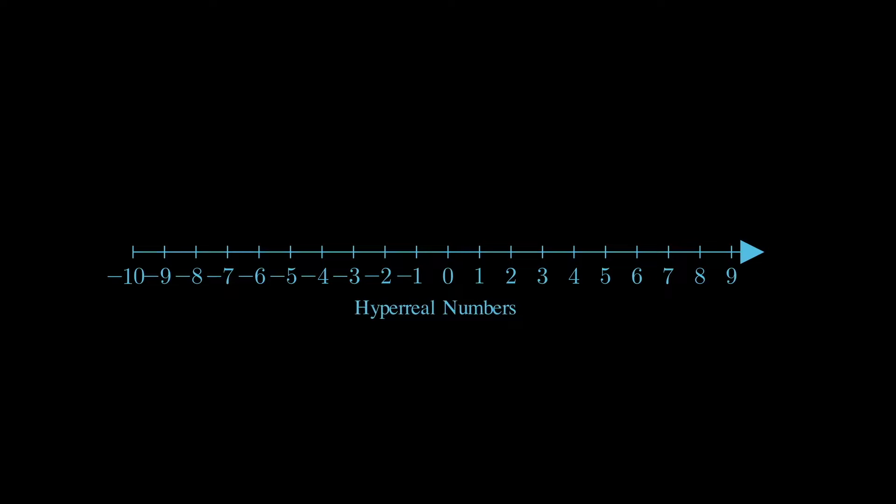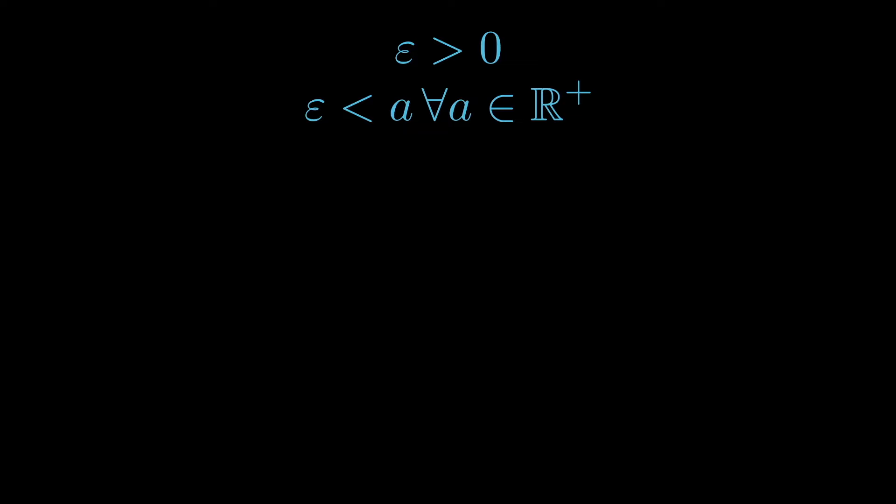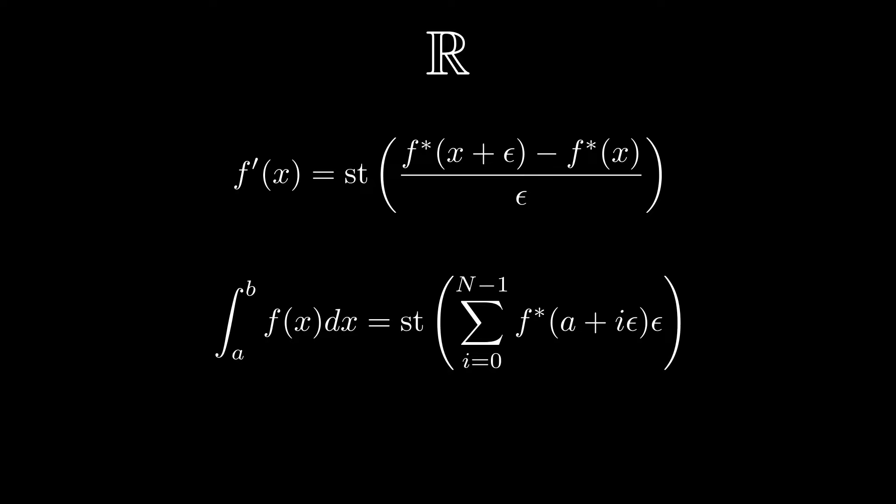Hyperreal numbers include all the real numbers we're familiar with, but they also incorporate infinitesimal and infinitely large numbers. An infinitesimal hyperreal number is a number greater than zero, but smaller than any positive real number. Conversely, an infinitely large hyperreal number is greater than any real number. Hyperreal numbers are used to give a rigorous foundation to calculus, a field that inherently deals with the infinitely small and infinitely large.